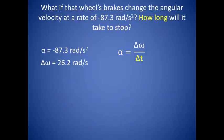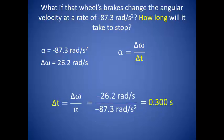So what if that wheel's brakes changed the angular velocity at a rate of negative 87.3 radians per second squared? How long will it take to stop? Well, what would we need to know? We have our angular acceleration of negative 87.3 radians per second squared. And in the previous section we were given the angular velocity of 26.2 radians per second. We can rearrange our formula for angular acceleration to solve for the change in time, and we find that it takes 0.300 seconds for the wheel to stop.